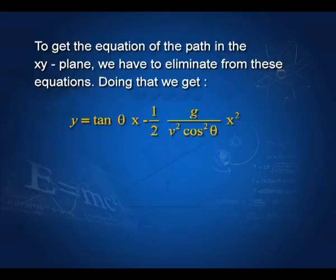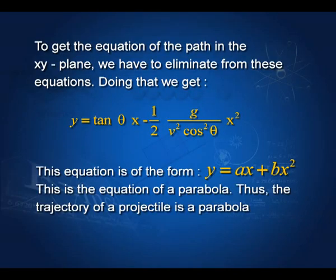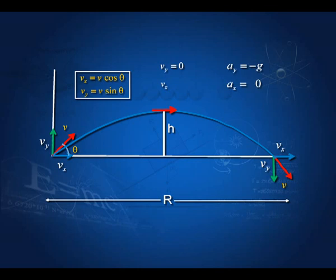To get the equation of the path in the xy-plane, we eliminate t from these two equations and get: y equal to x tan θ minus half g x squared divided by v squared cos squared θ. This equation is of the form y equal to ax plus bx squared, which from geometry is the equation of a parabola. Such a body launched at an angle is called a projectile, and this path is the trajectory of the projectile.